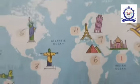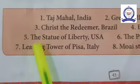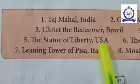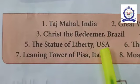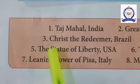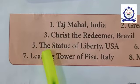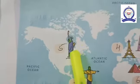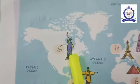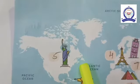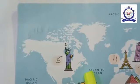The fifth one is the Statue of Liberty. It is in the USA, which means it is in the North America continent. The Statue of Liberty is number 5.